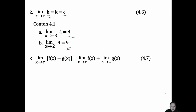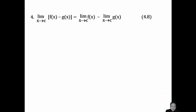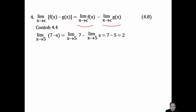Teorema penjumlahan: limit beberapa fungsi yang dijumlahkan itu sama saja dengan limit masing-masing fungsi kemudian kita jumlahkan. Contoh: limit x mendekati 5 dari (x + 6) — sesuai teorema, kita cari limit x mendekati 5 dari x, hasilnya 5, kemudian limit x mendekati 5 dari 6, hasilnya 6, jadi hasilnya 11. Kemudian teorema pengurangan fungsi mirip dengan penjumlahan: limit masing-masing fungsinya kemudian kita kurangkan. Contoh: limit x mendekati 5 dari (7 - 2), maka limit dari 7 dikurangi limit dari 2.